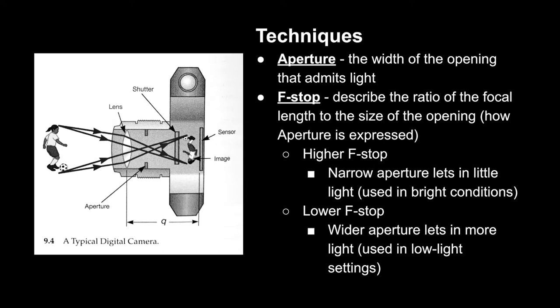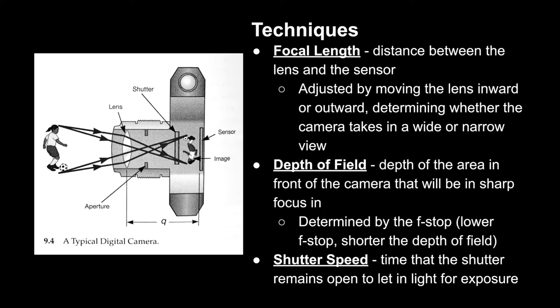When there's not a lot of light, you want to let more in to get a proper exposure. The focal length is the distance between the lens and the sensor. In adjusting this, the lens moves inward or outward, determining whether the camera takes in a wide or narrow view. The depth of field describes the area that will be in focus — from the nearest to the farthest area that will appear sharp — and this is determined by the f-stop: a lower f-stop means a shorter depth of field.